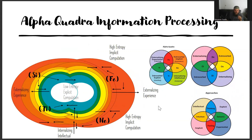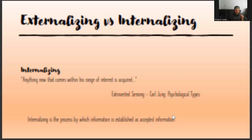We're going to talk about the approaches later, not in this video, but just to show how you can combine this with your quadra. So we've got the alpha quadra as an example. Extroverted feeling is doing high entropy implicit computation and externalizing experience. Extroverted intuition is doing high entropy implicit computation and internalizing intellectual. You can combine them and sort of work together with that. There's some shorthand for what these two are doing independently. We'll get into that later, but this is just to define our terms a little bit as we start to talk about this.